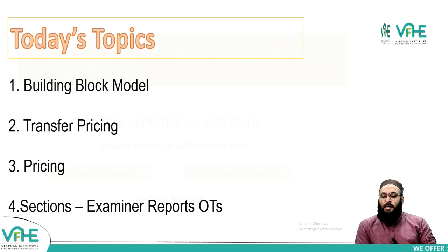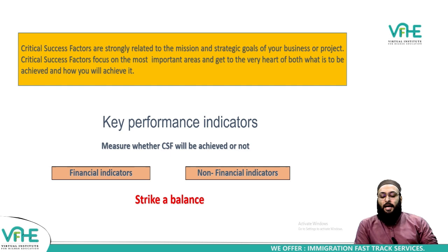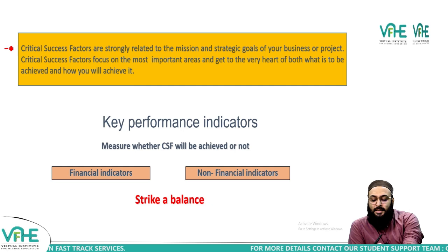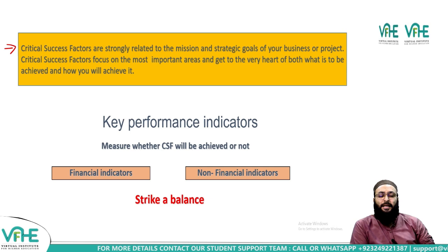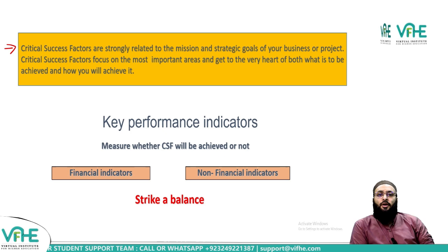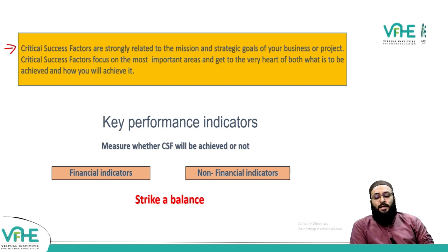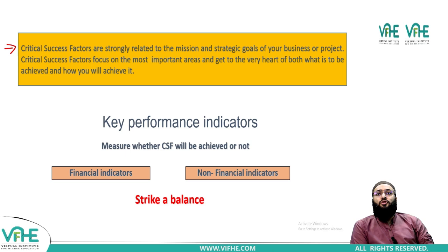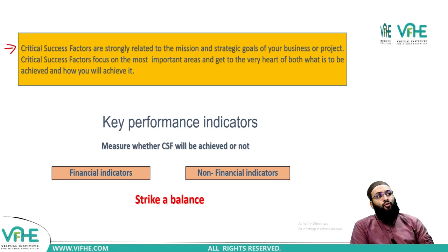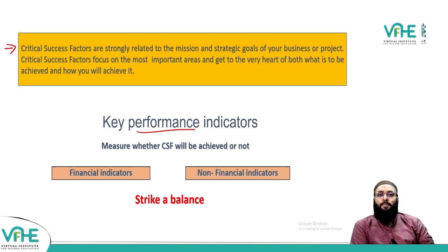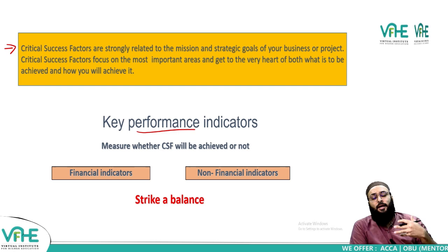It's very important for a business to have good Critical Success Factors — CSFs — in place. CSFs are the areas where a business should win; they're important for achieving the business's mission and vision. To check whether you're on track to achieve these CSFs, you need KPIs — Key Performance Indicators — which measure and check whether CSFs are being achieved or not.